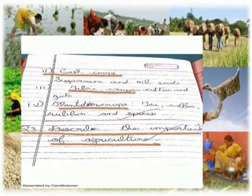4. Plantation crops: tea, coffee, rubber and spices. Question 3.